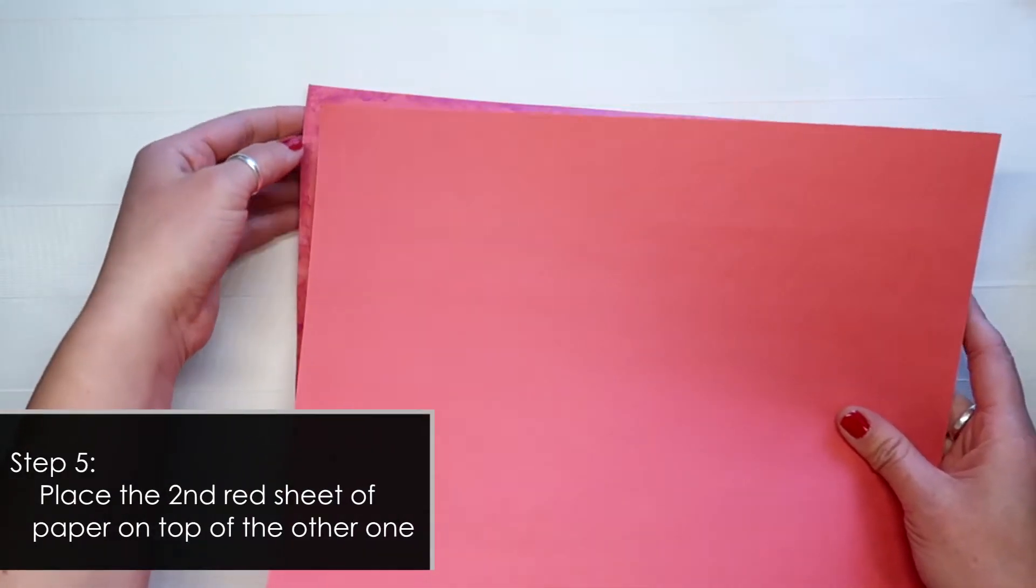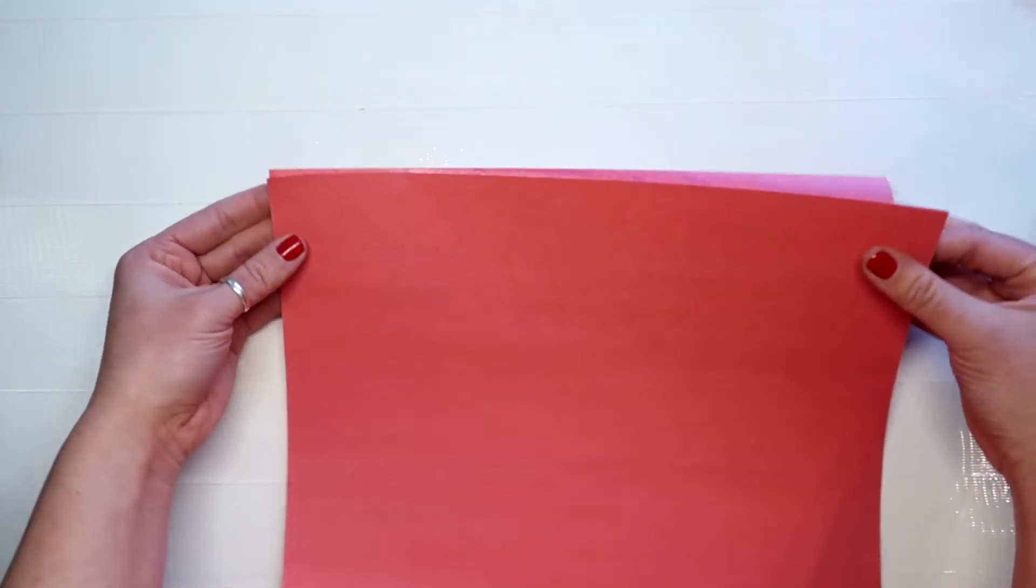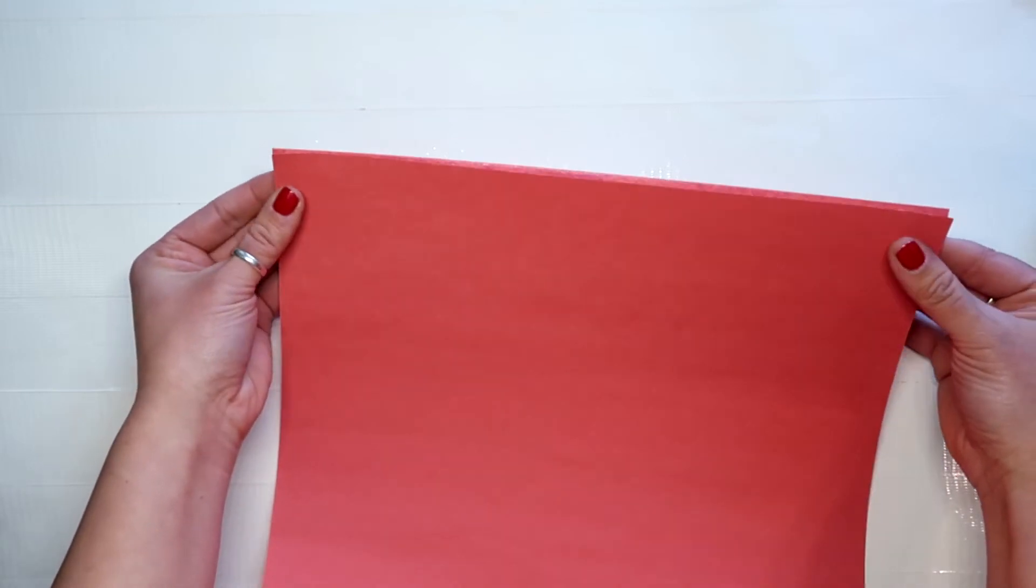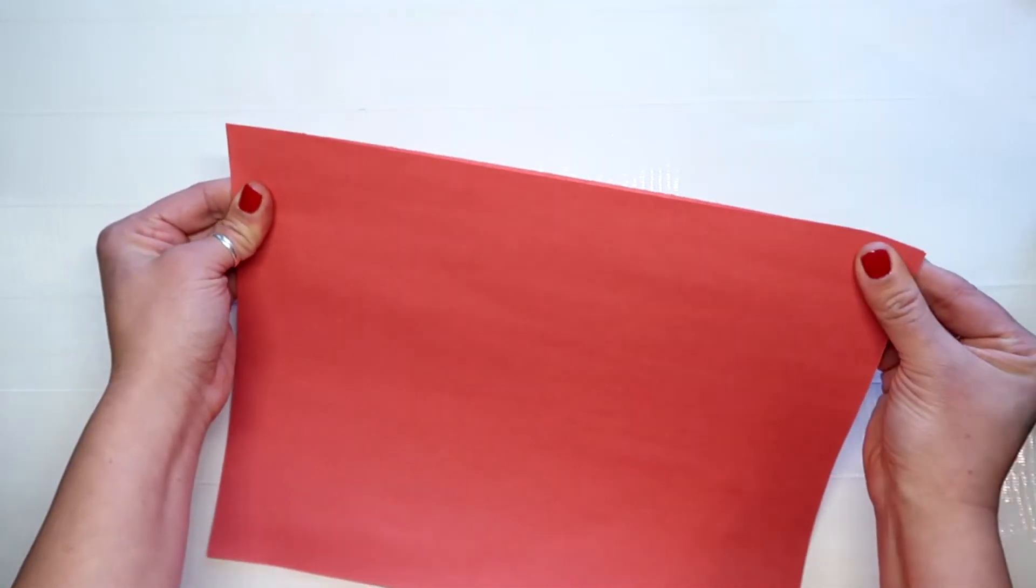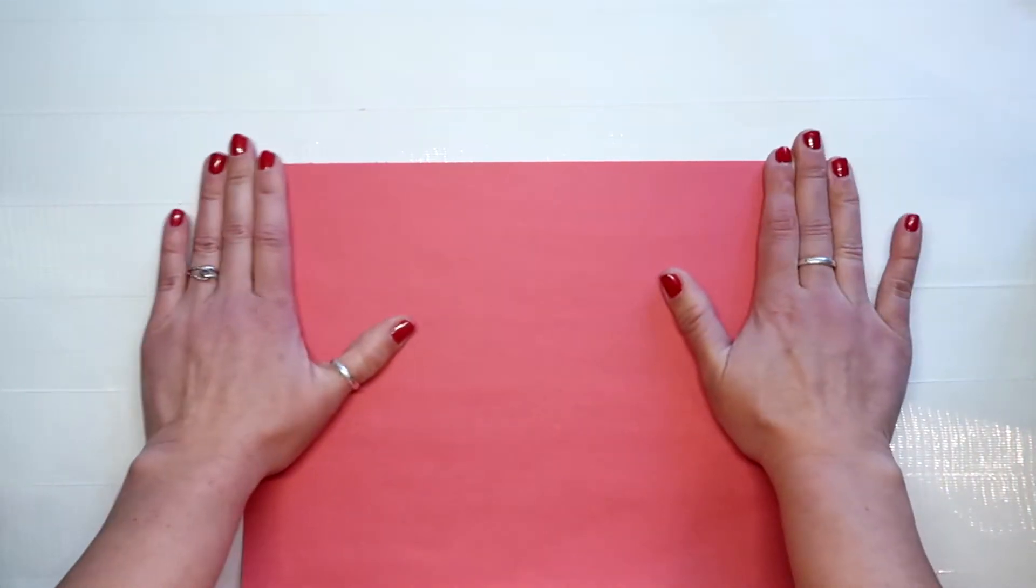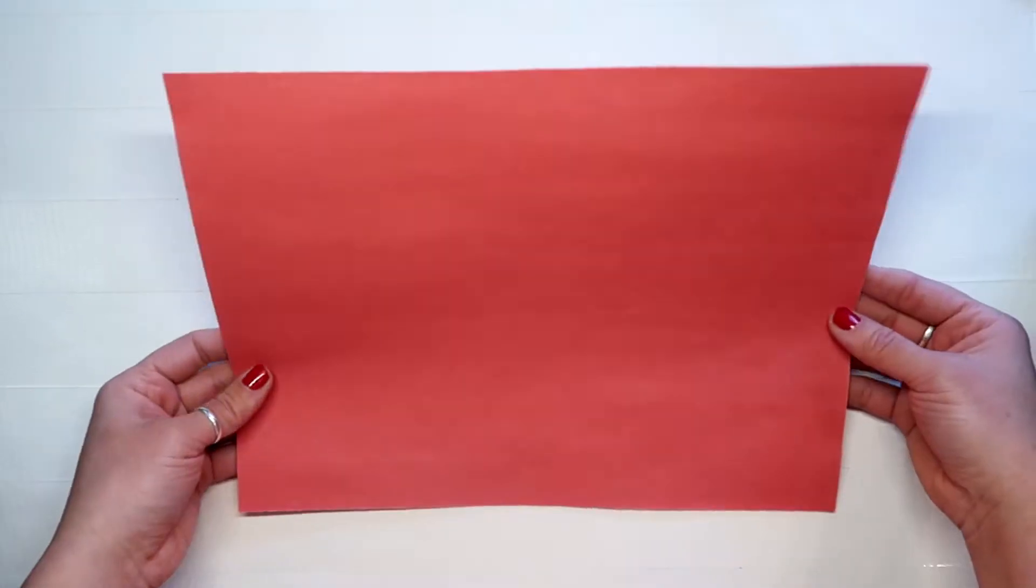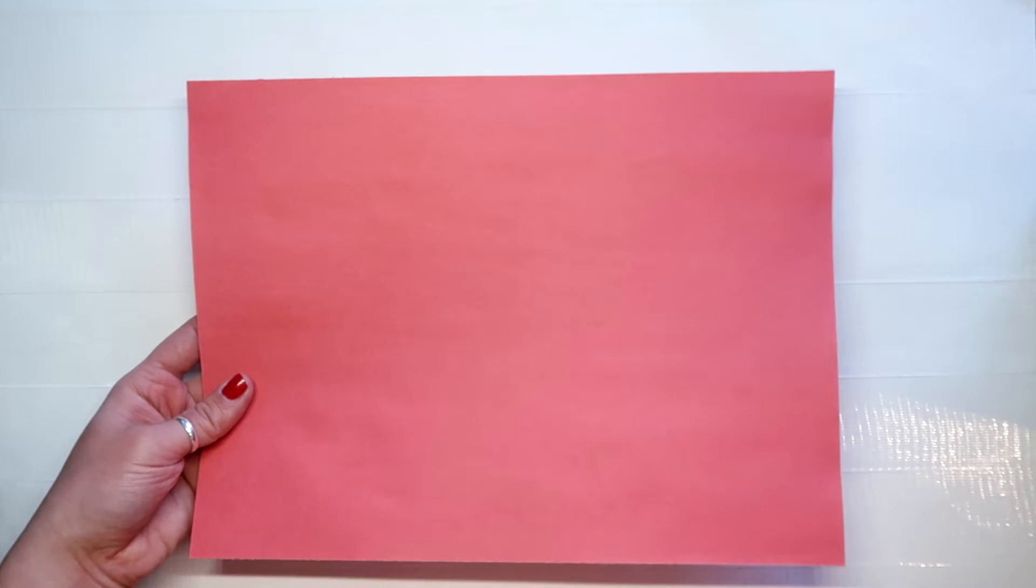So now you're just going to line up your paper and you want to get it exactly the same so I'm just making sure they're completely lined up and once they are you're just going to press down. So now you can set this aside and just let it dry while we're working on the tree.